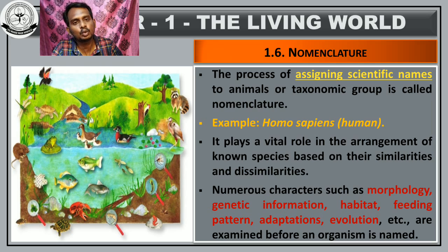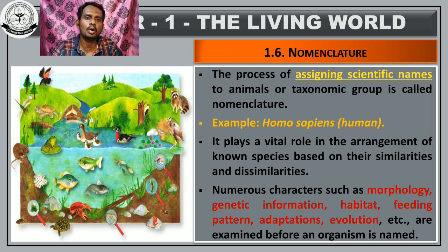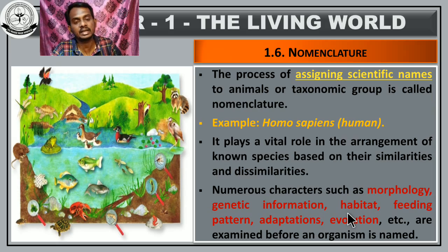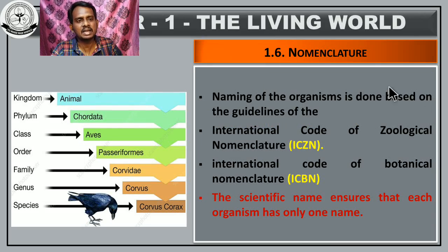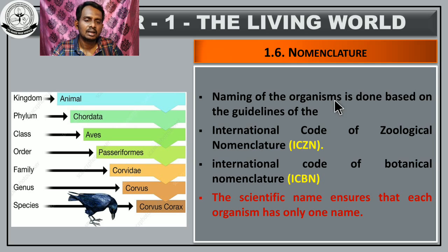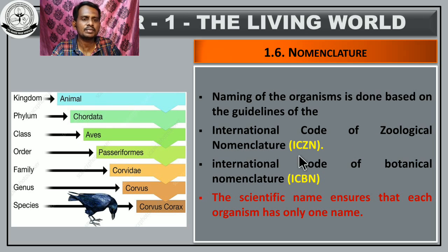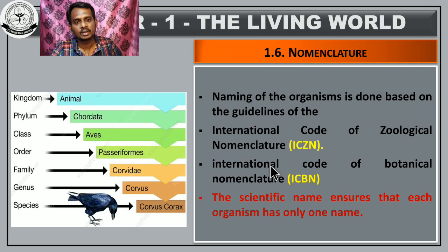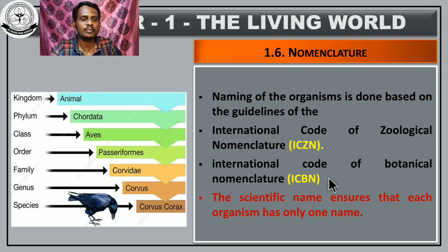Nomenclature is the assigning of scientific name — that's all. The scientific name for human being is Homo sapiens. The characteristic features observed for naming of organisms are morphological character, genetic information, habitat, and feeding habit. The naming of organisms is done based on guidelines. For zoological organisms, the International Code of Zoological Nomenclature provides the guidelines. For fungi and plants, the International Code of Botanical Nomenclature provides the guidelines.